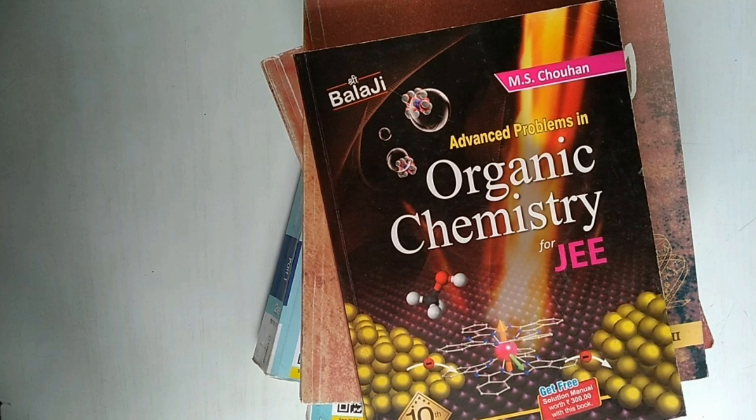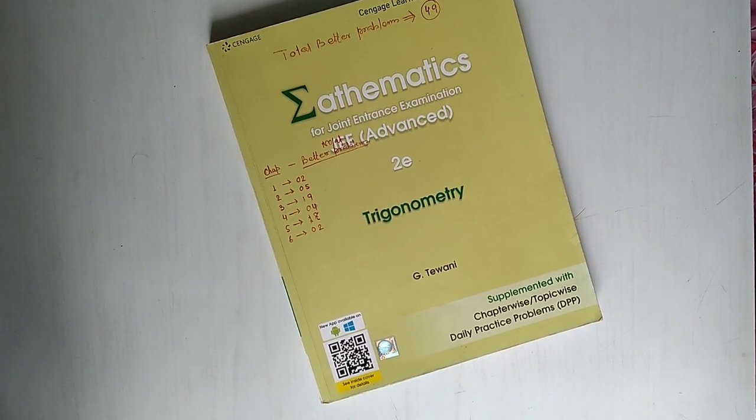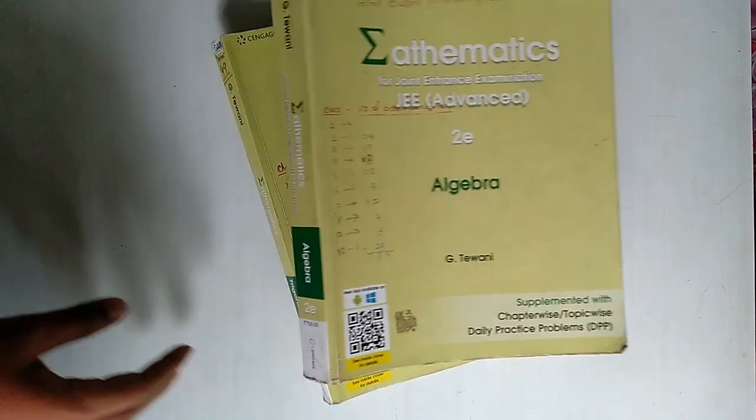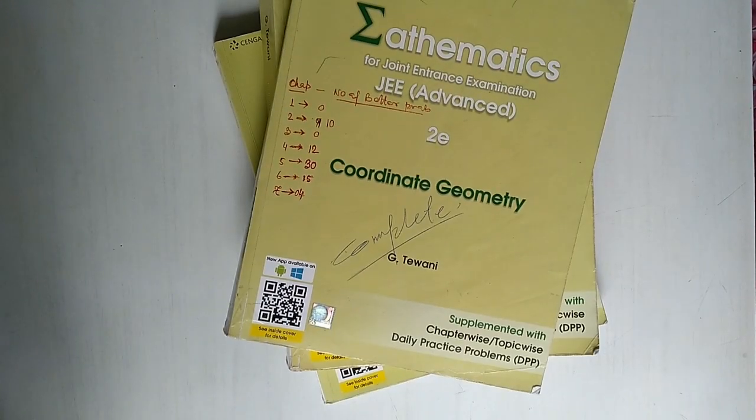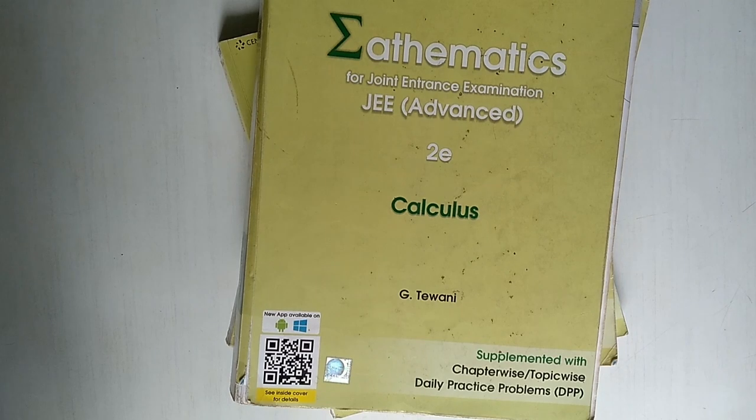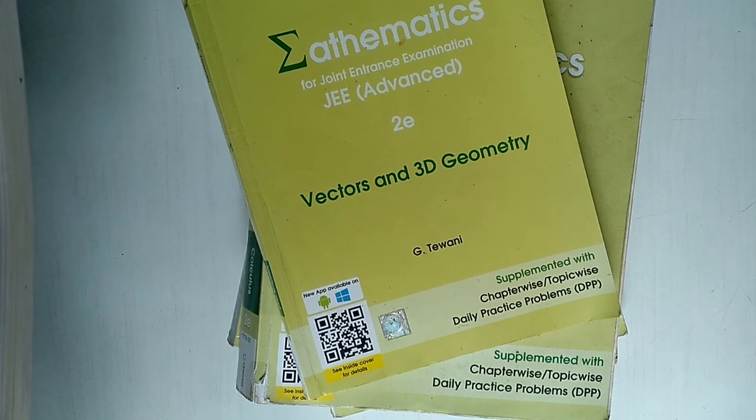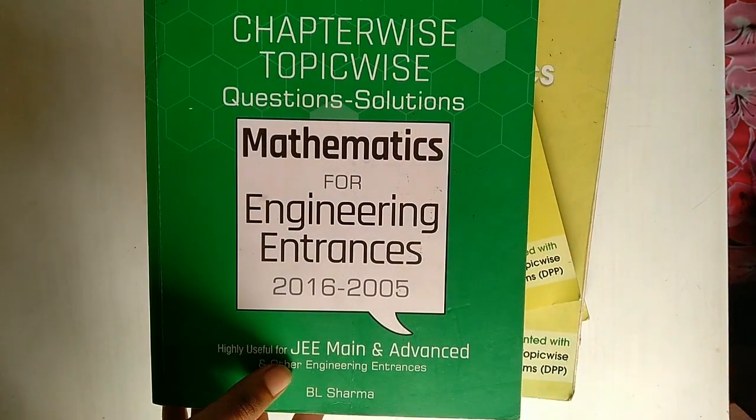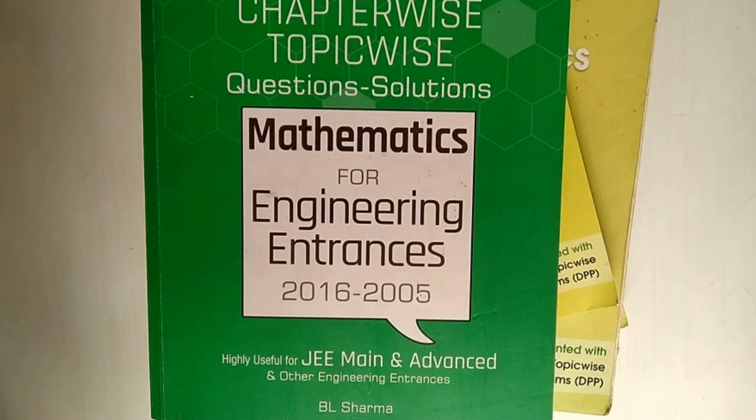For maths, I just did Cengage and Biel Sharma. Again, Cengage has different parts for different topics of the whole 11th and 12th syllabus. There is algebra, trigonometry, calculus, coordinate geometry, and vector in 3D. Those are all the parts I guess, and I just completed all those. You can also find all the theory in those books. And for pure practice at the later end of the preparation, I just solved some Biel Sharma. And there is another book I could not find right now, that is New Pattern of Cengage. That is a really good practice book for the end session, and that almost wraps it up for math.